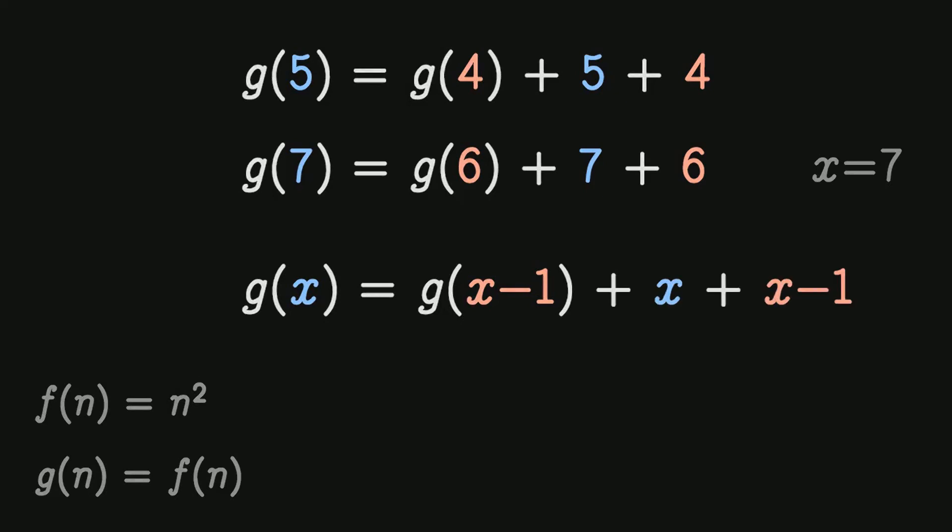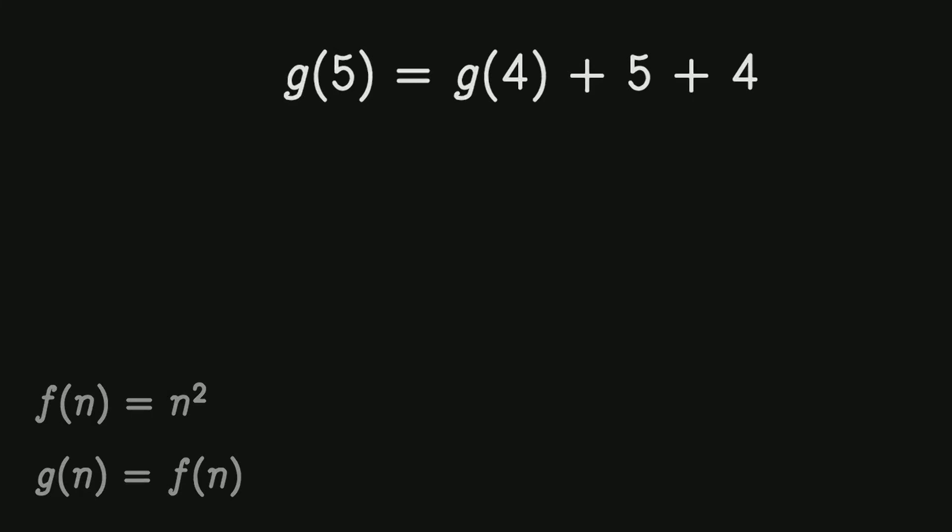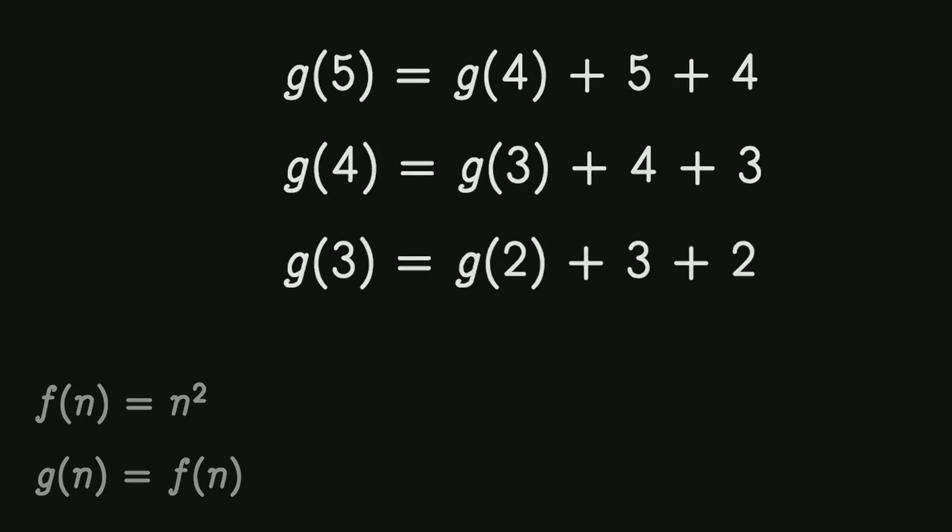But the truth is that this function will work. Because we have here that g of 5 is equal to g of 4 plus 9. Okay, but what is g of 4? Well g of 4 by definition is g of 3 plus 7. But what is g of 3? g of 3 is equal to g of 2 plus 5. But what is g of 2? And we can keep going like that, because a function like this will create an infinite chain of references.